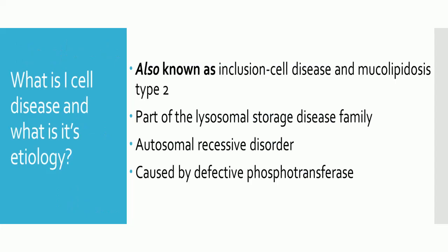What is I-cell disease and what is its etiology? I-cell disease, also known as inclusion cell disease and mucolipidosis type 2, is a part of the lysosomal storage disease family. It is an autosomal recessive disorder caused by defective phosphotransferase.